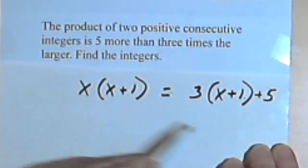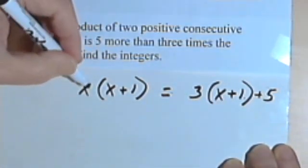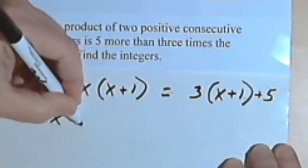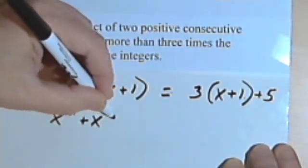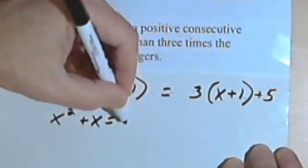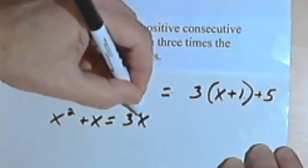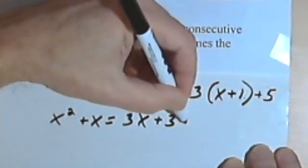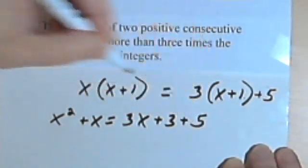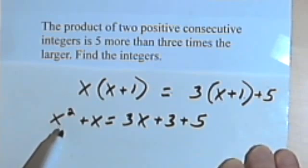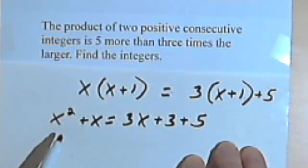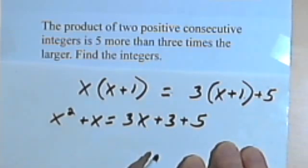Let's clean this up. Let's do all the multiplication we need to. So x times x plus 1 is going to be x squared plus x. 3 times x plus 1 is 3x plus 3. And then we're still adding the 5. Now we've got the squared here, so we're gonna have a quadratic equation. We'll get all the terms on the left side and set everything equal to 0.